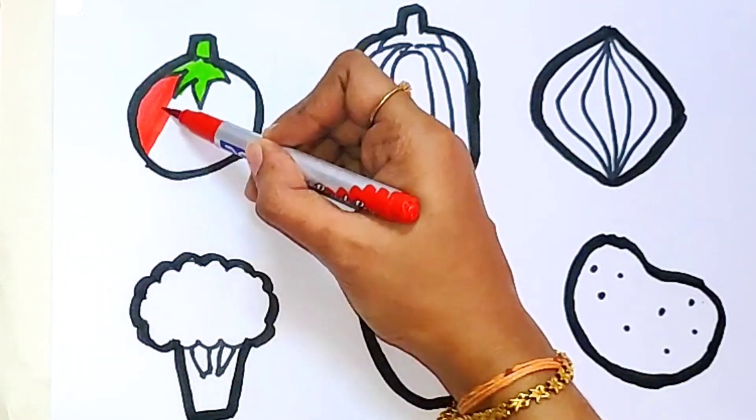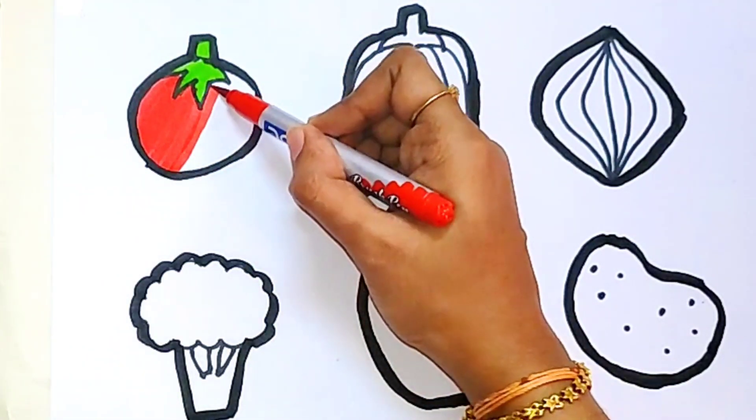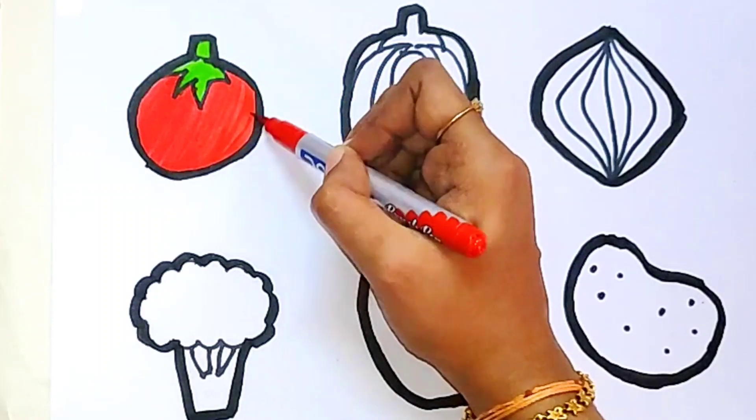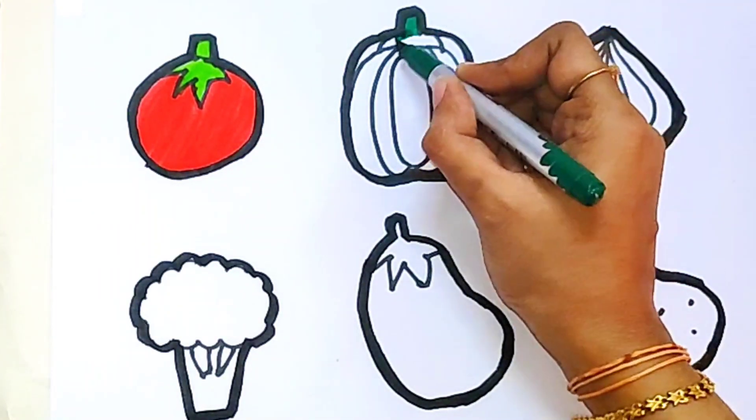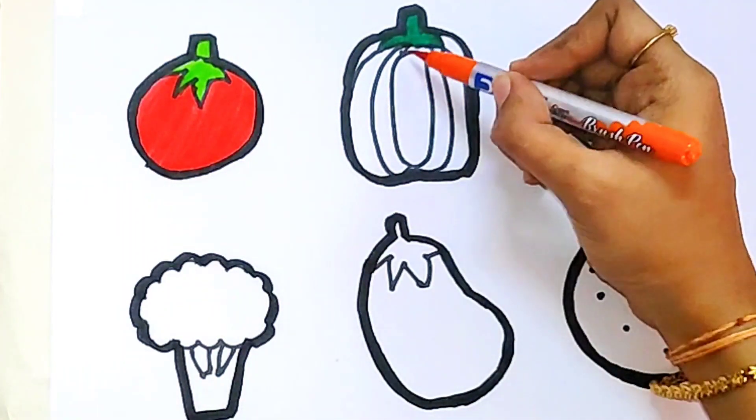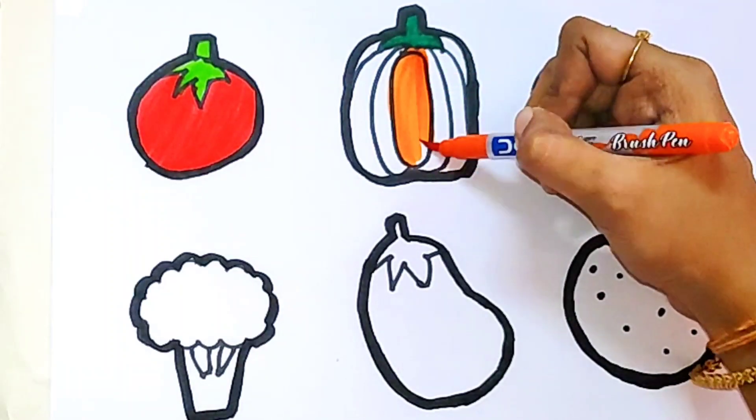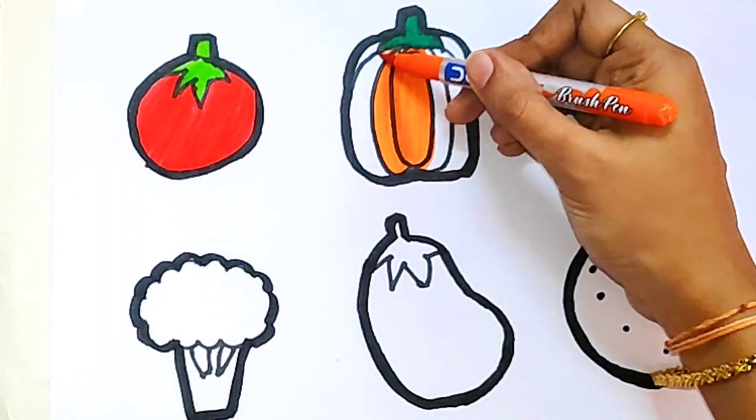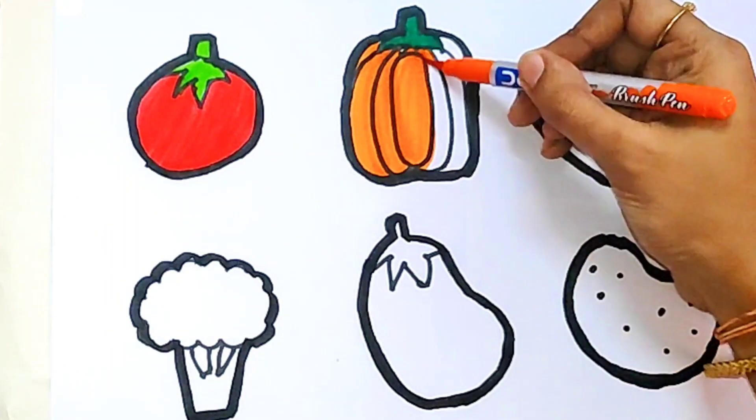And red color for the tomato. Dark green color, orange color for the capsicum. This is the orange capsicum.